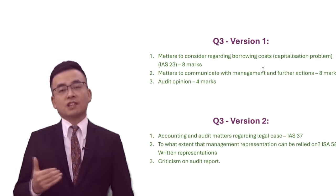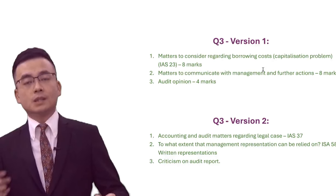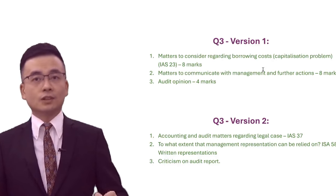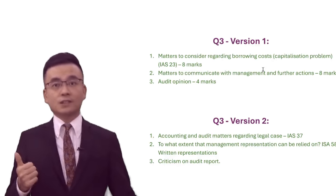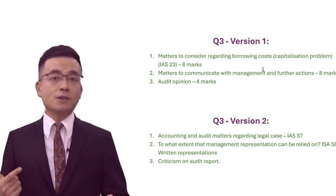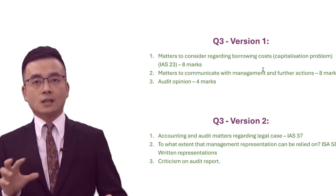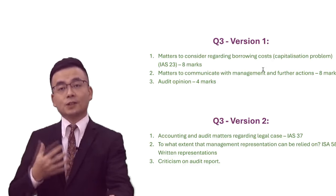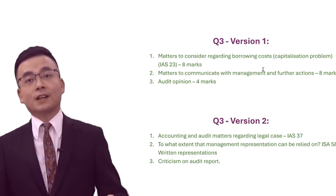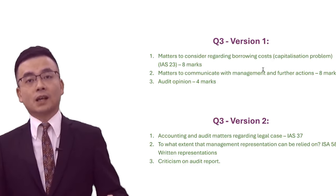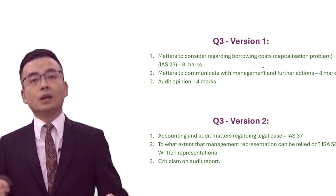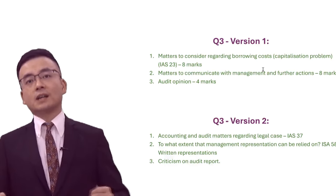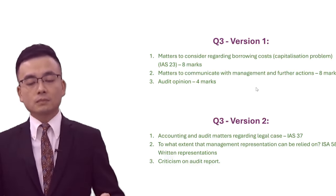The last question in the AAA exam also has two versions. Version number one is all about capitalised borrowing costs. You need to determine, for example, the interest rates to use and the periods over which we can capitalise the interest expense on PP&E. Number two covers matters to communicate with management and further actions, such as obtaining written representations. Finally, you need to consider what type of audit opinion to give — a very, very standardized question and quite fair.